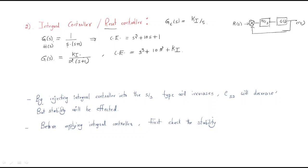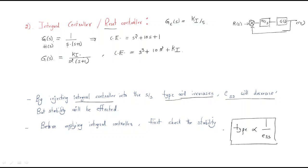By injecting the integral controller into the system, the type will increase. Here the type was one, but now the type is two. Type is the number of poles at the origin. Whenever the type increases, steady-state error decreases. Type is inversely proportional to the steady-state error.